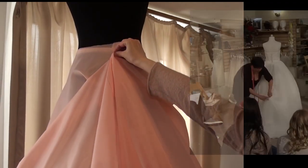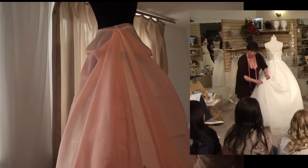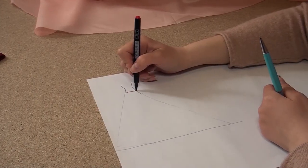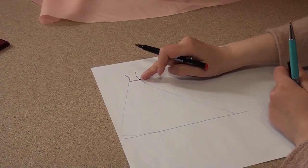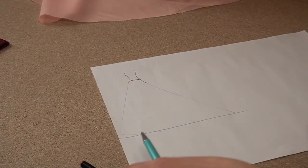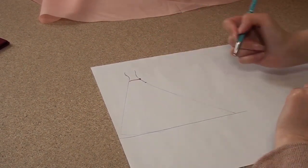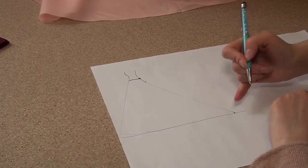Let me explain how to find and mark the point of the bustle. This is the top point, this is the point for sewing on the first loop, and it's the third point.